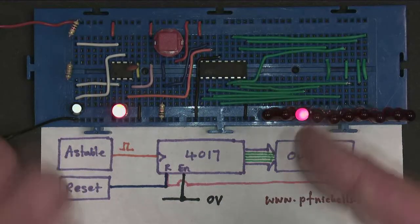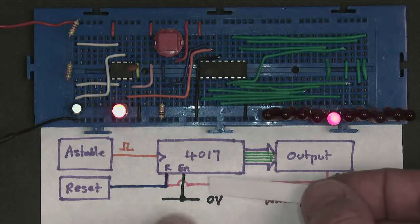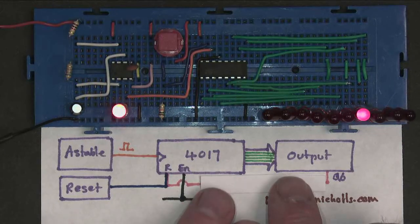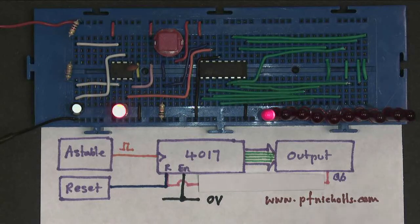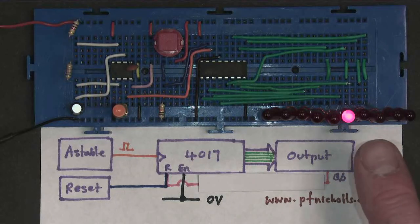Finally, I've returned my circuit to its original state. I've removed the pink wire. Much easier to do on a diagram. Much easier to do on the circuit, sorry, than on the diagram. And we're back to our original counter, counting all 10 outputs.